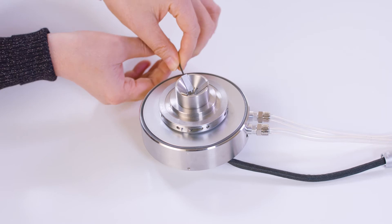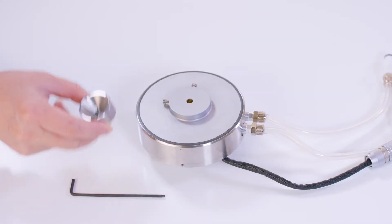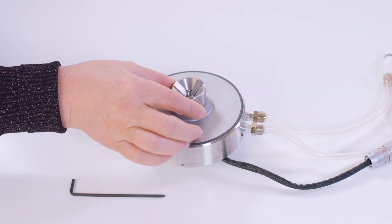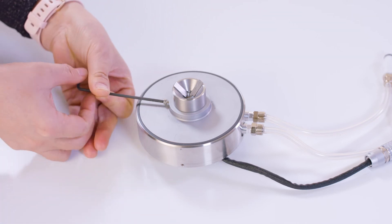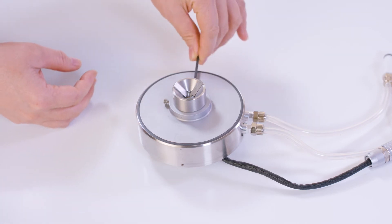For disposable Peltier users, you can directly insert this three-plates lower geometry to the Peltier. After that, install the Peltier to the bottom of the rheometer.